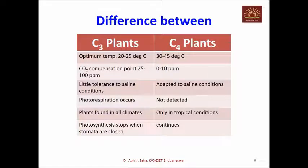Here we shall try to understand the difference between C3 plants and C4 plants. By this time you have already understood the difference between C3 cycle and C4 cycle. In nature, most plants — maybe 90 to 95% — are actually C3 plants. A very small number of plants belong to C4 plants.